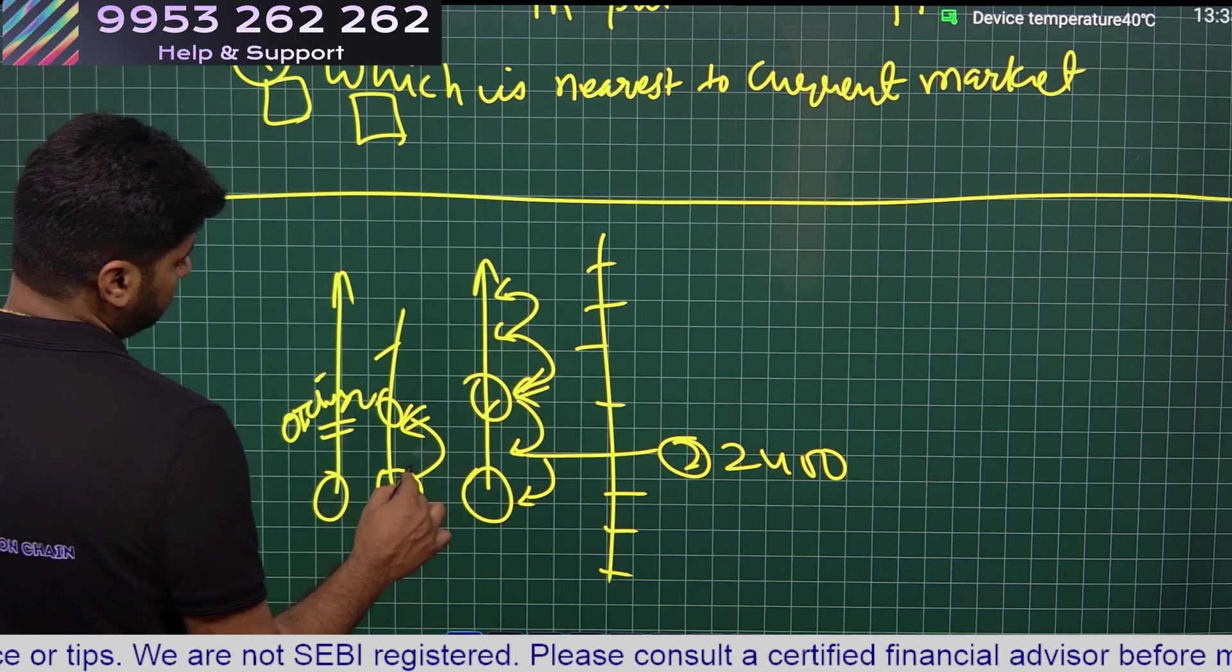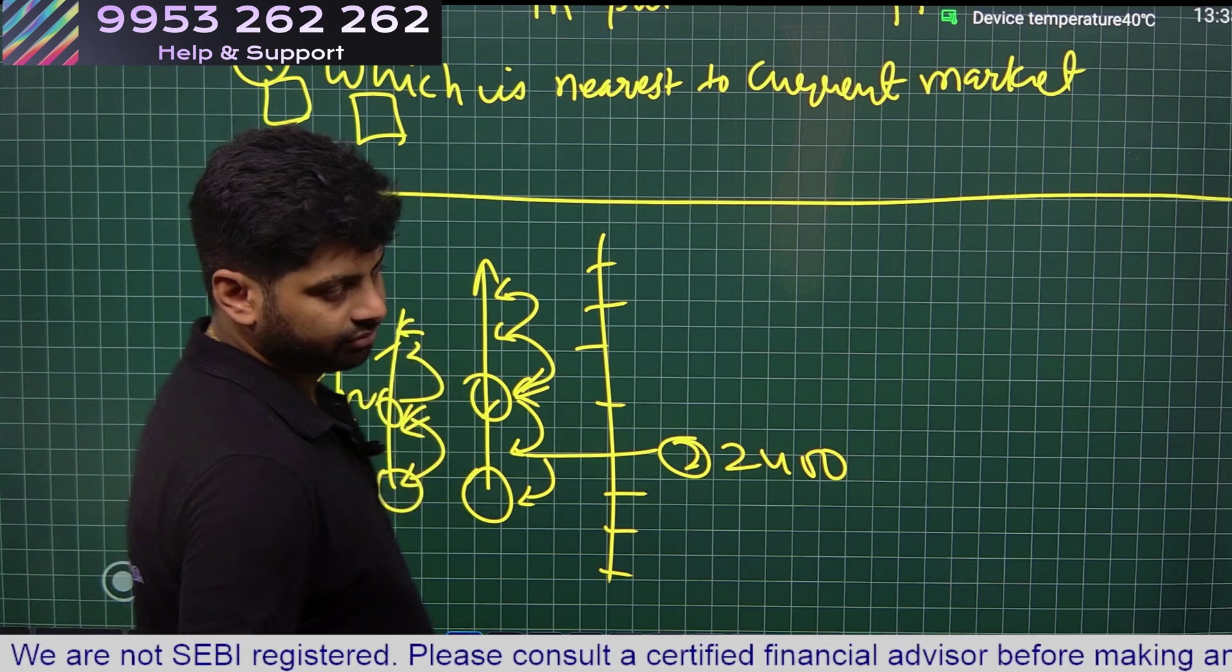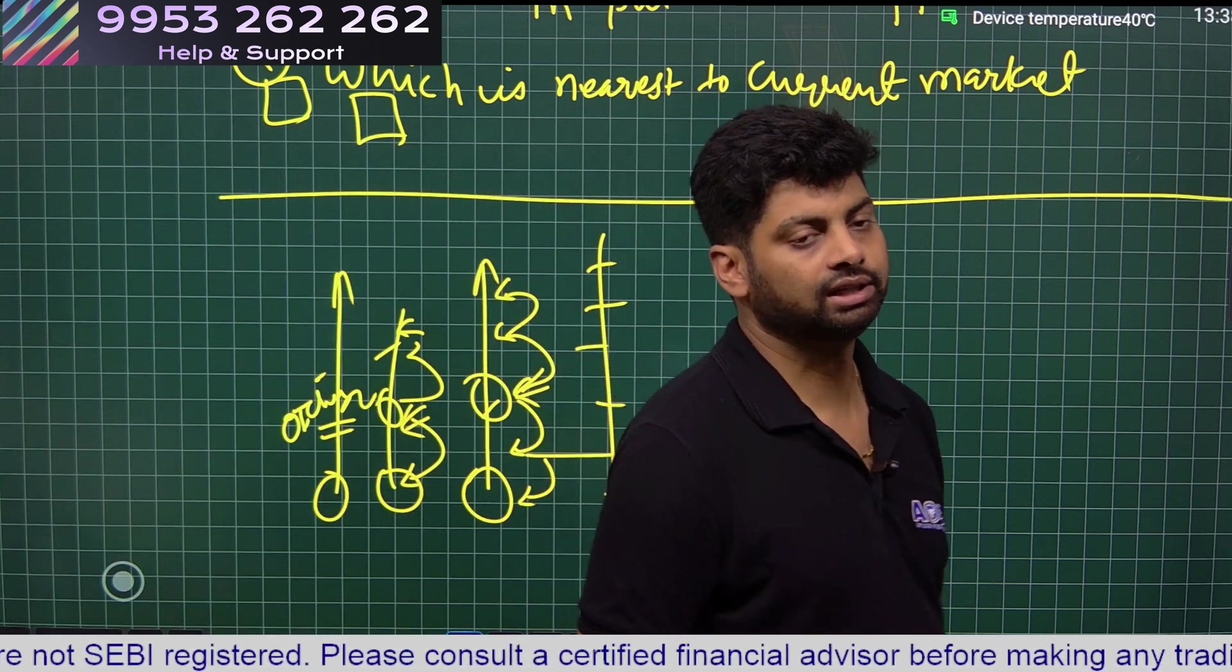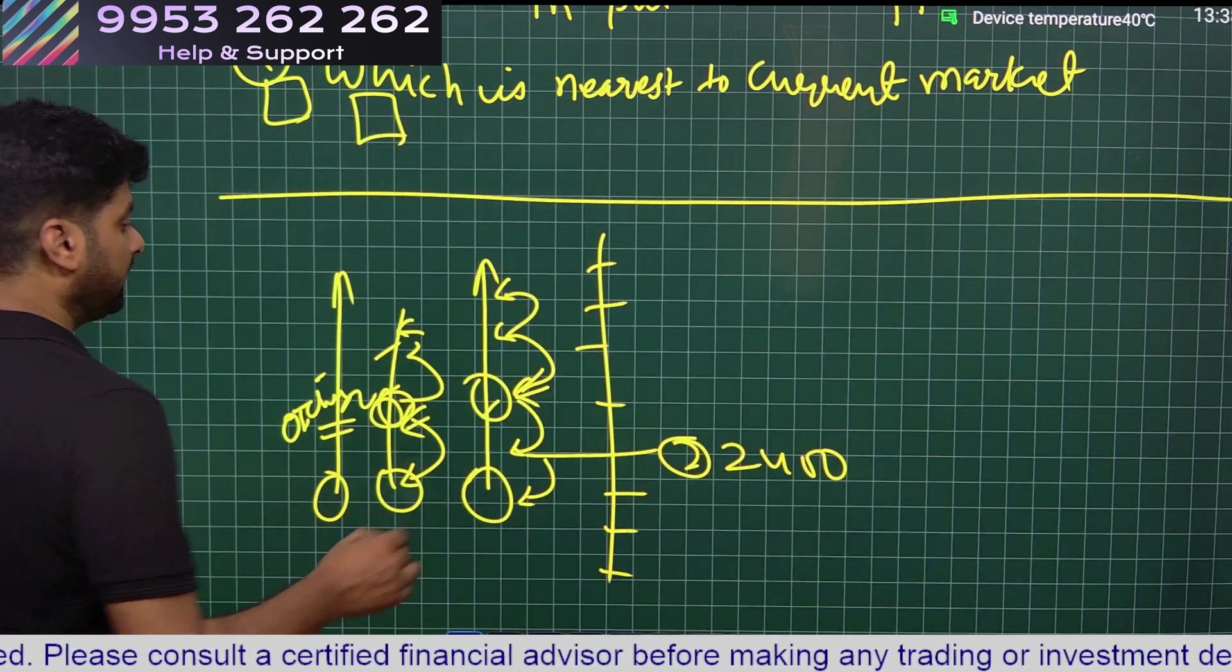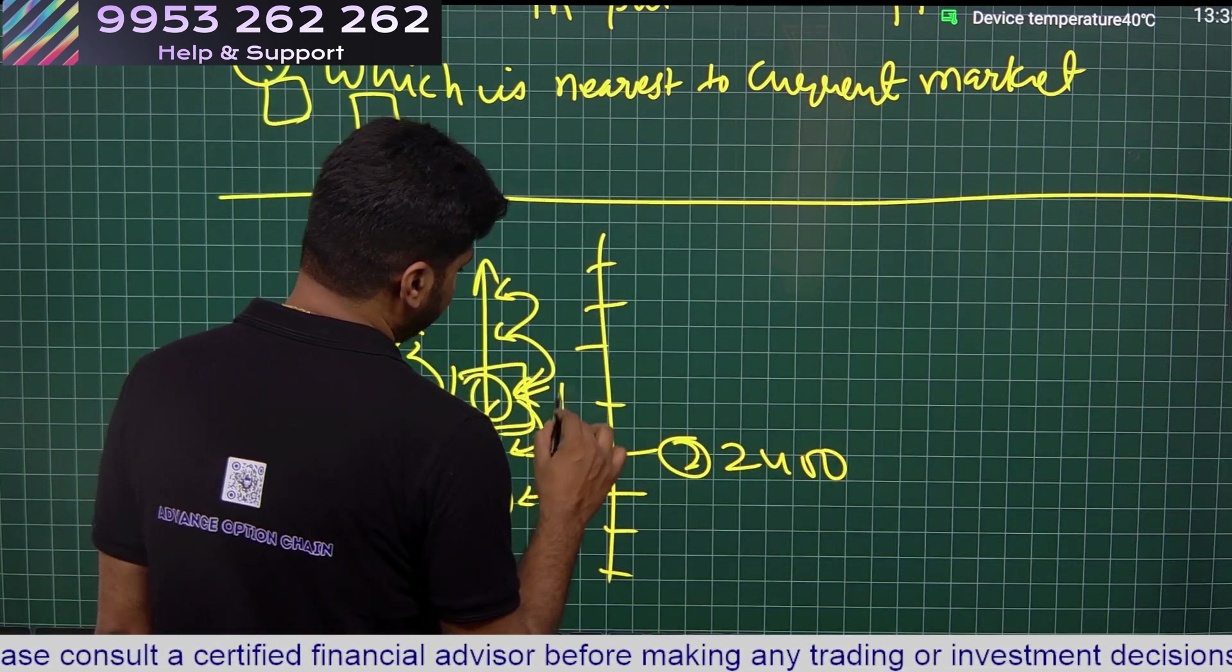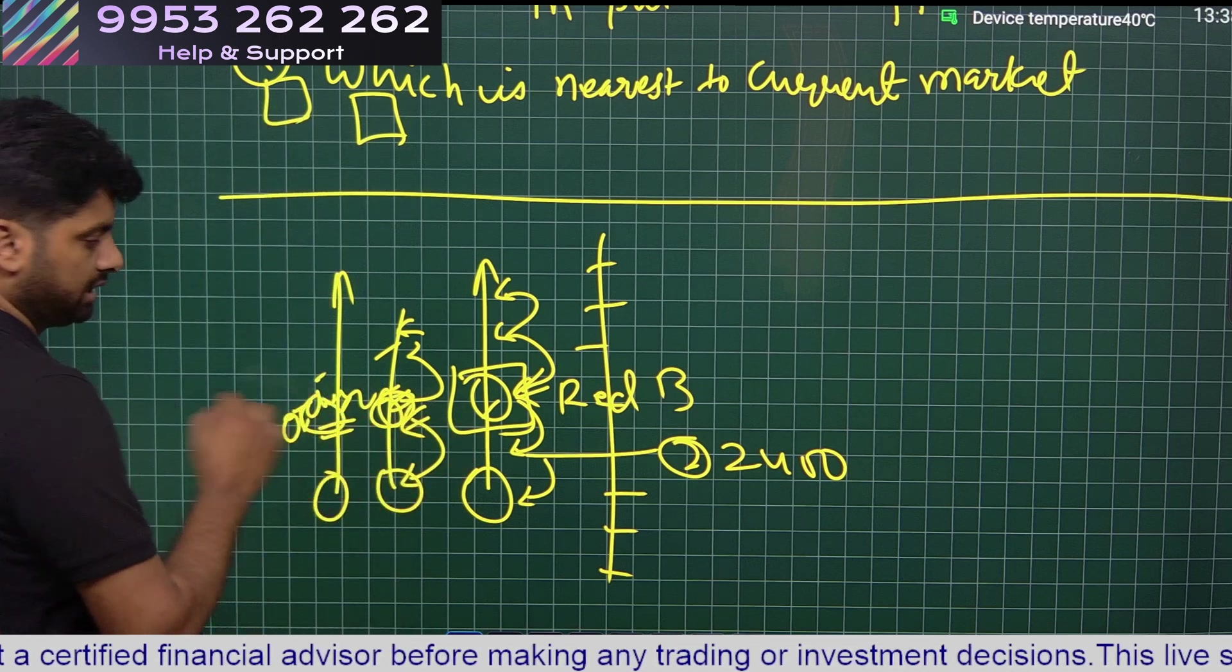Similarly for OI we will do the same, we will give 100% for the maximum OI and calculate other percentages in terms of maximum OI. Now in AOC that 100% is marked as red box for OI, OI change and volume.